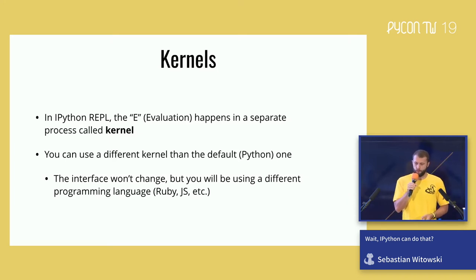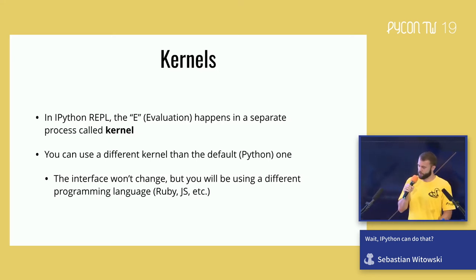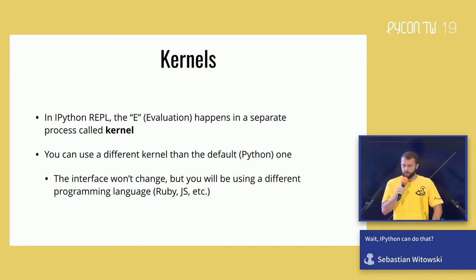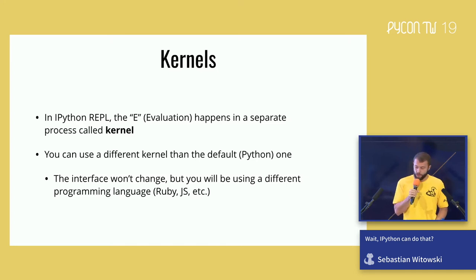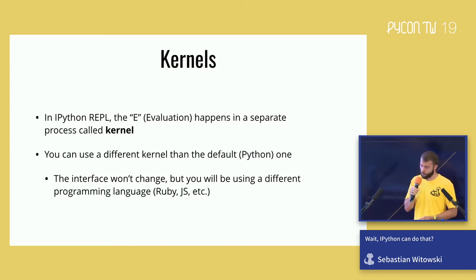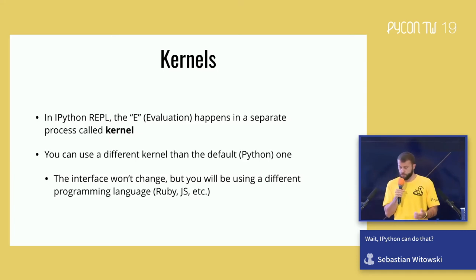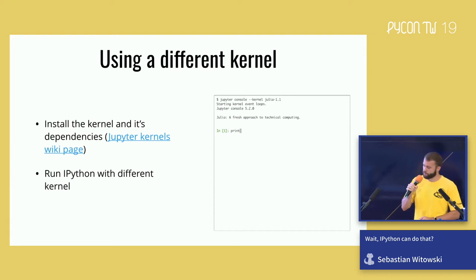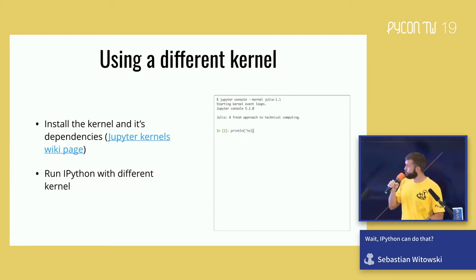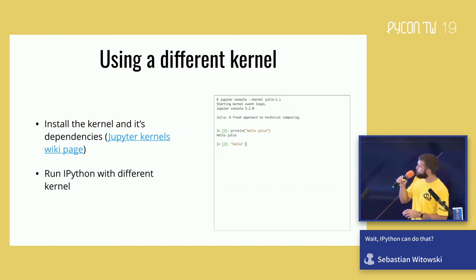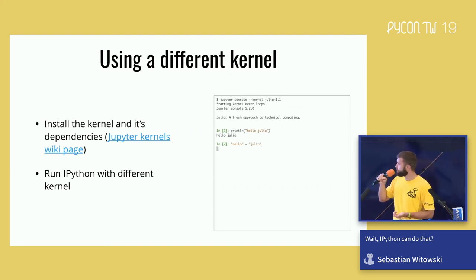In IPython the evaluation part of the REPL happens in a separate process. It means the process evaluating the code — called the kernel — can be decoupled from the rest of IPython. This has one great advantage: IPython is not limited to Python. You can easily swap kernels and use IPython with a completely different programming language — the interface won't change, but a different interpreter will run your code. For example, if you install the iJulia kernel and run IPython with it, you can execute Julia code right from IPython. The REPL still looks the same, but now you use Julia syntax — and if you try to write Python code you'll get an error.